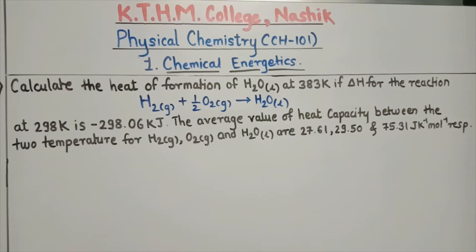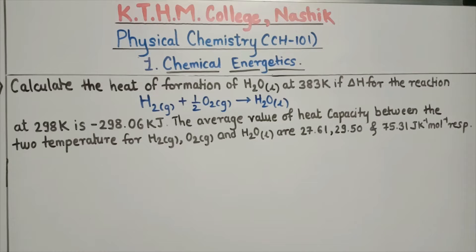Our first numerical is: calculate the heat of formation of H₂O liquid at 383 Kelvin, if delta H for the reaction at 298 Kelvin is minus 298.06 kilojoule. The average values of heat capacity for H₂ gas, O₂ gas, and H₂O liquid are 27.61, 29.50, and 75.31 joule per Kelvin per mole respectively.